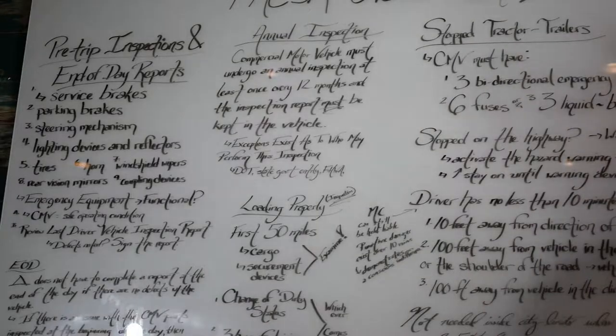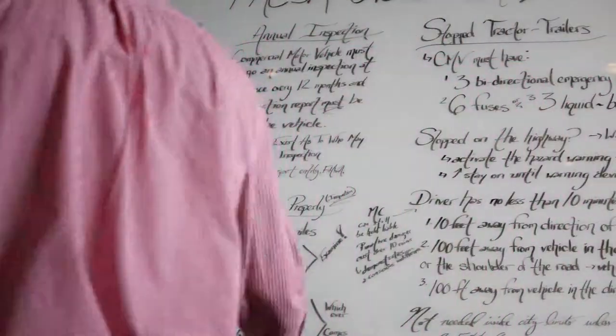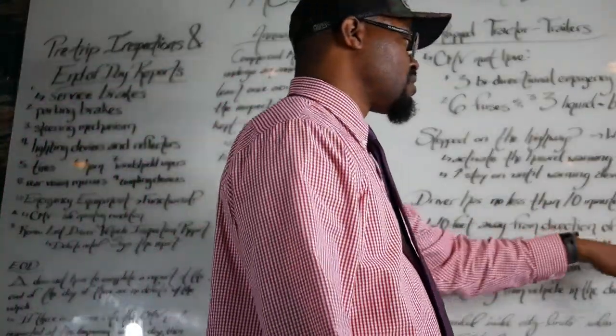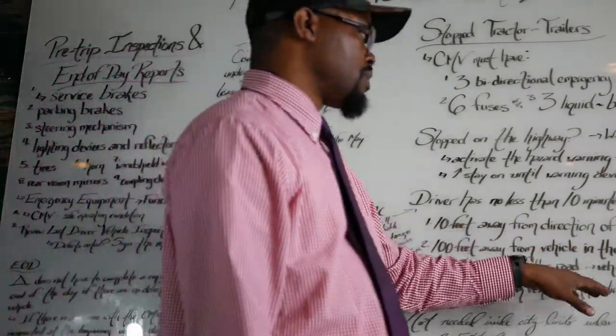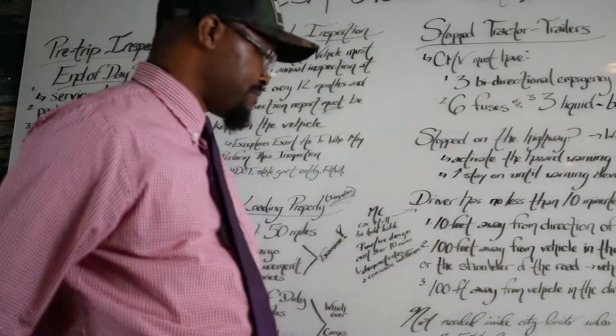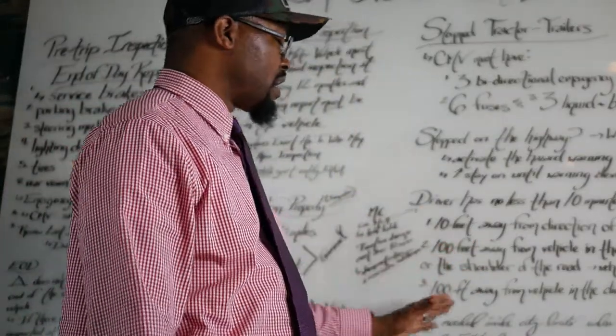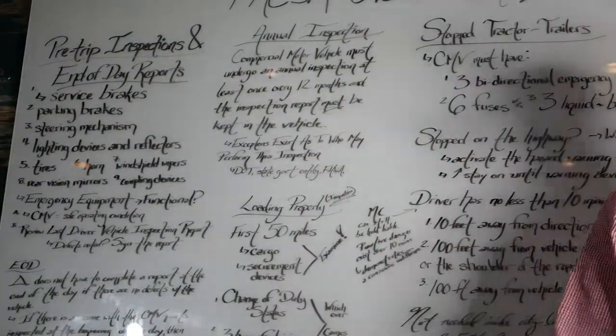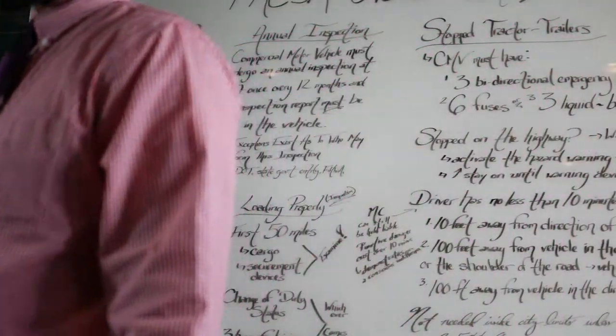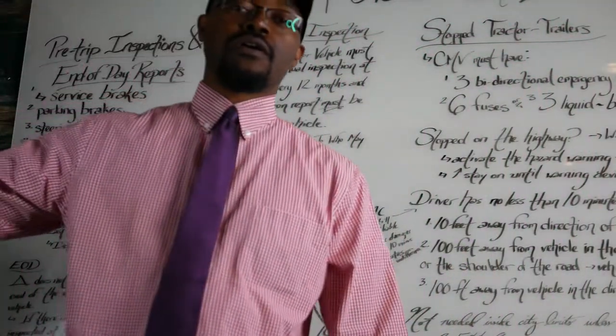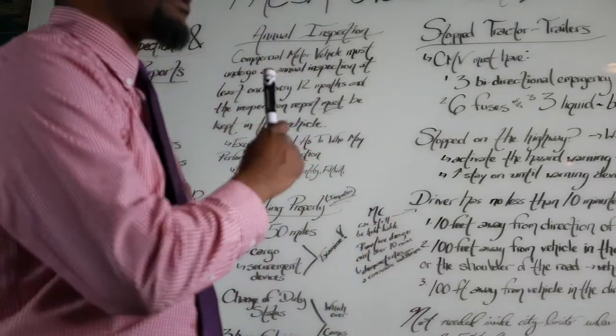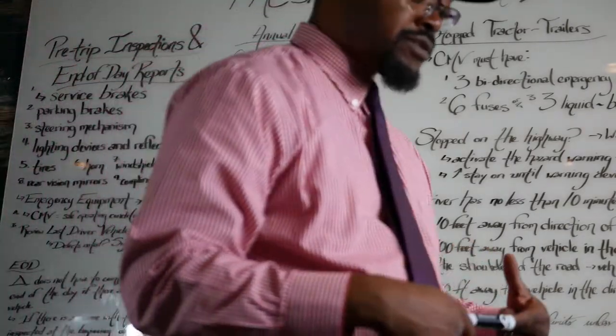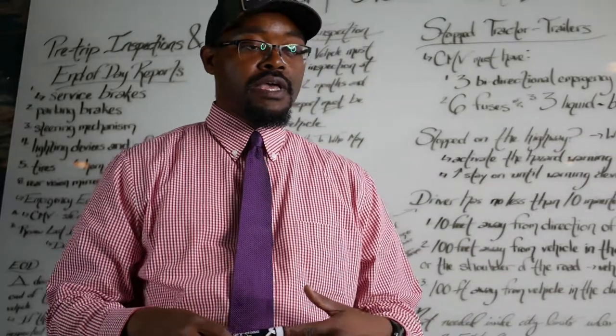I said driver has no less than 10 minutes to place warning devices. Now where they have to put the warning devices is: 10 feet away from the direction of approaching traffic, 100 feet away from the vehicle in the center of the traffic lane or the shoulder of the road for vehicles that are approaching the opposite way, and 100 feet away from the vehicle in the direction away from approaching traffic. Pretty much what you have to do is put those devices out there behind your trailer to let cars that are approaching know that your trailer and tractor are broken down on the side of the road.